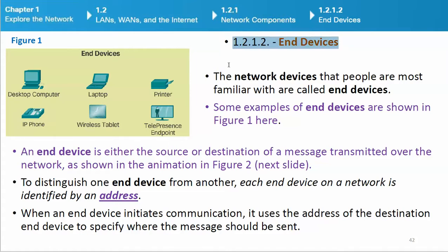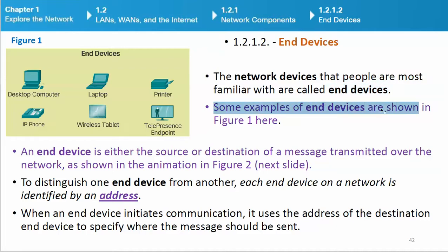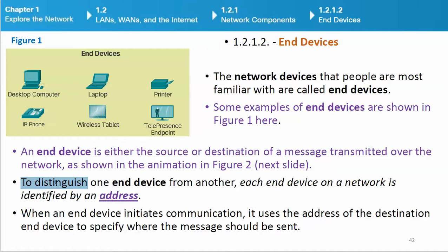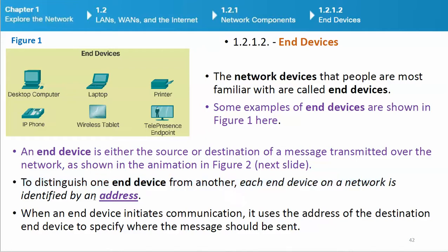The network devices that people are most familiar with are called end devices. An end device is either the source or destination of a message transmitted over the network. To distinguish one end device from another, each end device on a network is identified by an address. When an end device initiates communication, it uses the address of the destination end device to specify where the message should be sent.